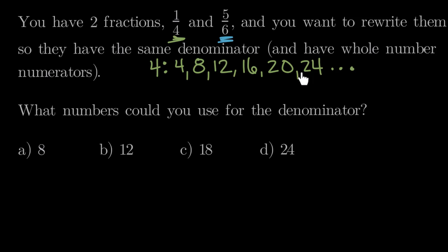The reason I'm stopping at 24 is I've looked at my answer choices, and I can see the largest possible answer is 24. So I don't need to write any larger multiples. There are many more multiples of 4, but we don't need to list them all, because the largest number we're going to have to consider is 24.